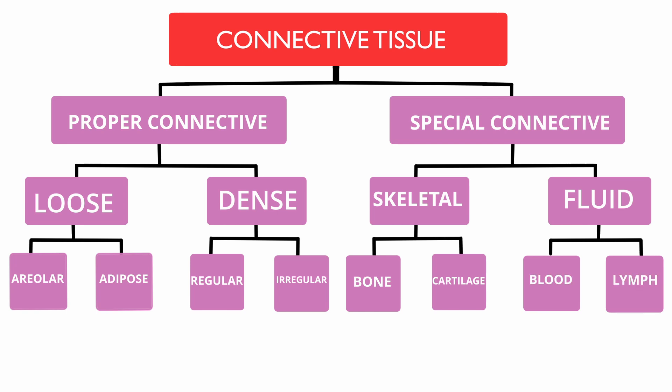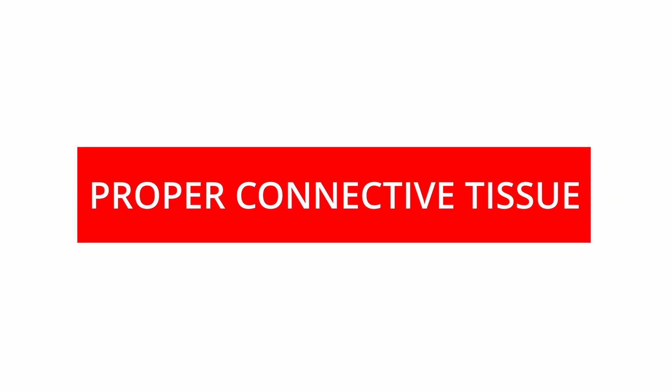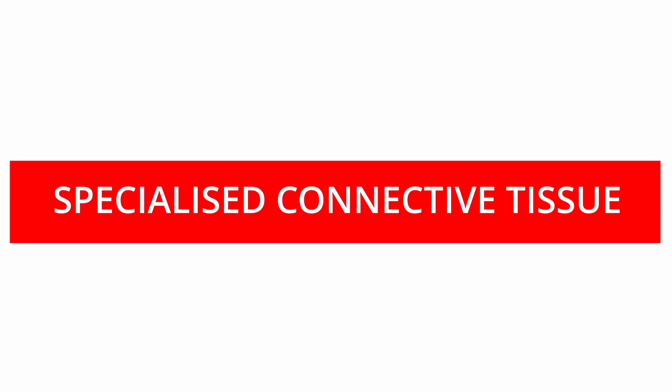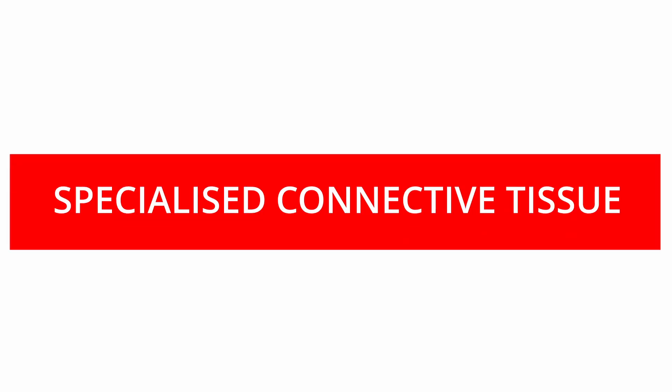I will quickly give a brief of each type of connective tissue in this chart before we dive deeper into each one. Proper connective tissue, also known as ordinary connective tissue, is the most abundant type in the body. Specialized connective tissue includes types that are uniquely structured and functionally specific to certain systems of the body.